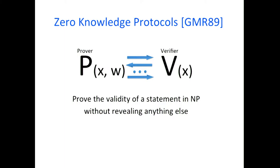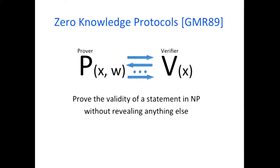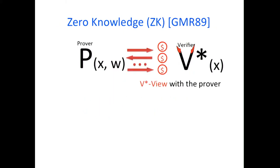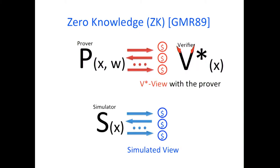Zero-knowledge protocols are fundamental and enable a prover to prove the validity of a statement without revealing anything else. This property is captured through the simulation paradigm, which requires that everything the verifier sees when talking to an honest prover — its view — can be simulated efficiently using a simulator that knows only the statement itself.